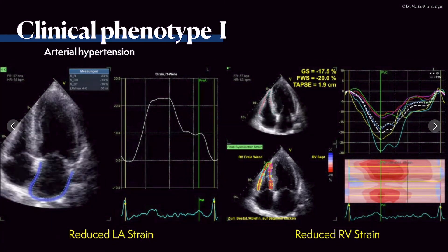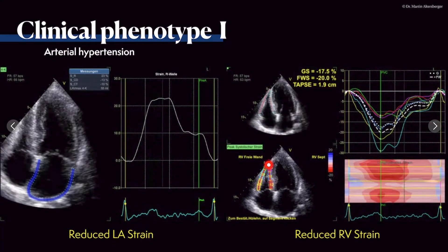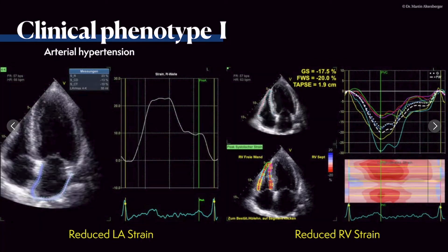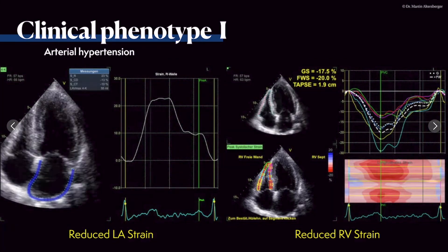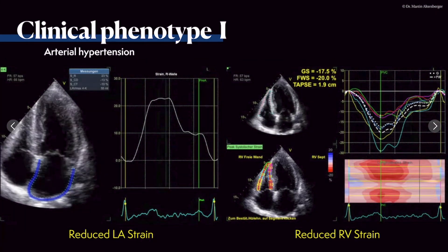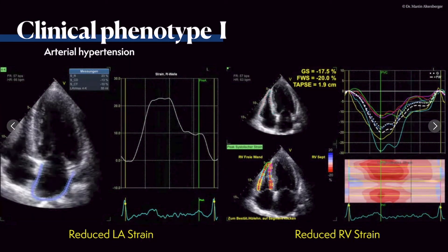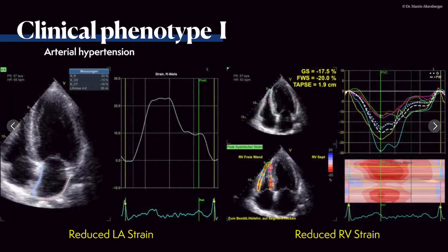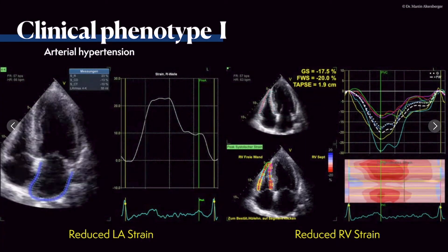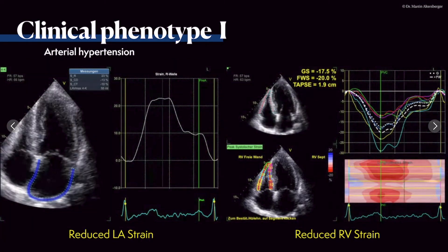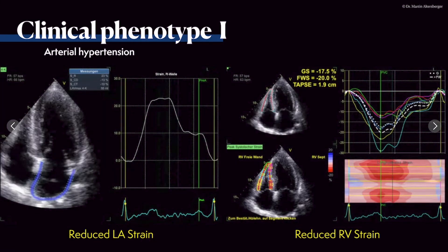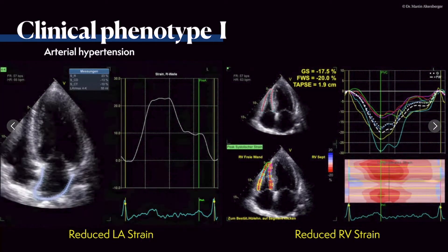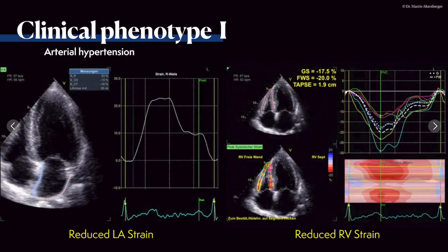For right ventricular strain, we see the overall region of interest, the tracing, the strain M-mode, and the curves. The global RV strain of minus 17.5% is reduced, and the free wall strain of minus 20% is also reduced - normal values would be minus 23% or more negative. However, TAPSE - the tricuspid annular plane systolic excursion - at 19 millimeters is still normal, so the basal segment is contracting well, but the mid-ventricular and apical segments are reduced, resulting in overall reduced free wall and right ventricular strain.